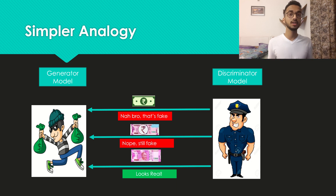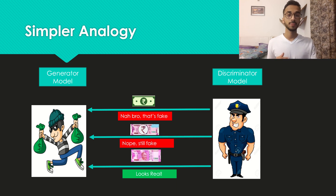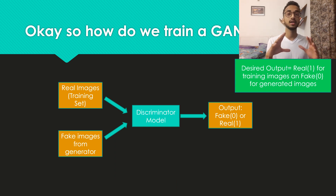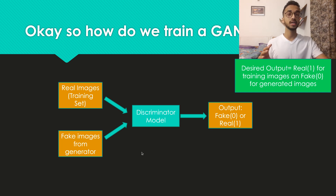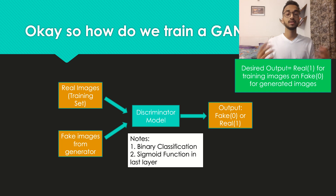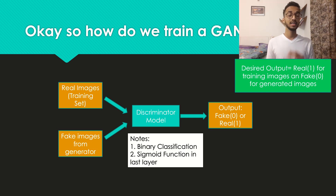Now let's look in more detail at how exactly the training process takes place for a GAN. In future videos I'll show coding examples to create your own GAN models. The training process is pretty simple — let's look at the generator and discriminator separately. The discriminator is a basic image classification model. You give it real images from the training set and fake images generated by the generator. All it has to do is output 0 or 1 based on whether an image is fake or real. We use a sigmoid function in the last layer, and the loss function is typically negative log loss, common in binary classification tasks.